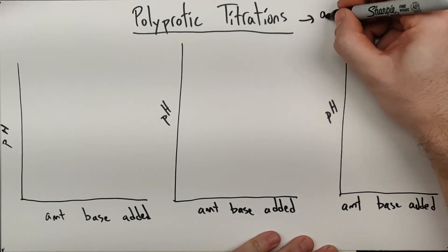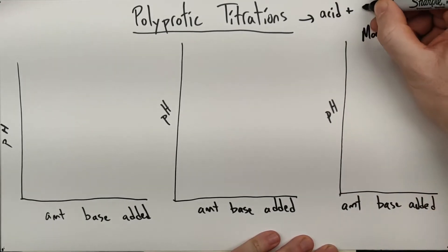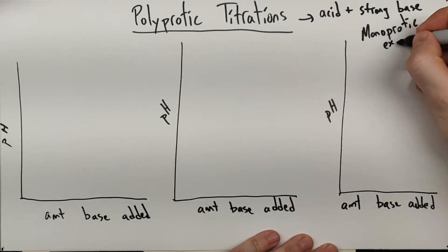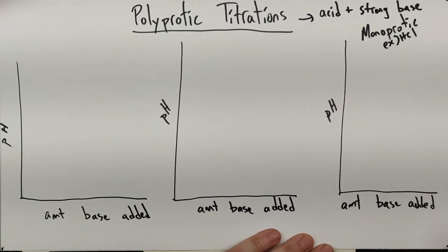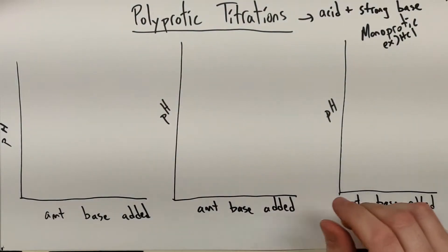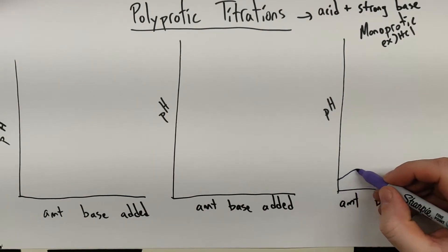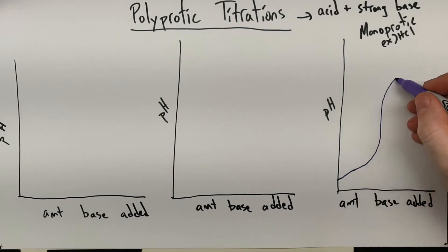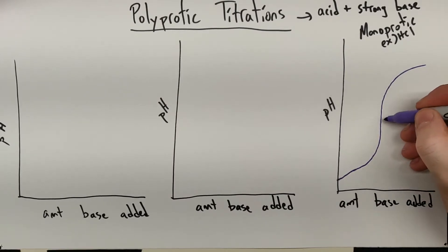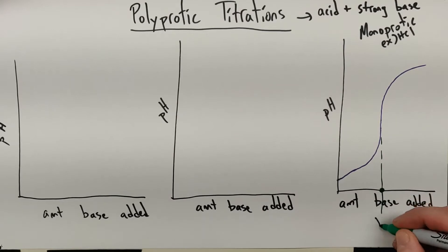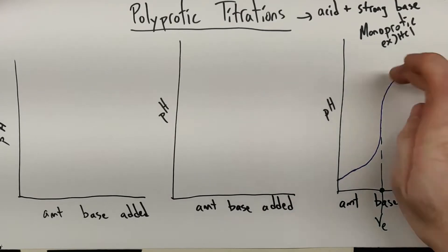I'm just going to look at these acid plus some strong base. For our monoprotic one, we might have something like HCl, and we've seen this curve a bunch of times at this point. You get an increase in pH as the base is added, and then you get that big jump, and then it plateaus as you just have excess base. And then we have this point right here that is our volume at the equivalence point.